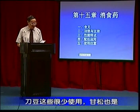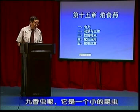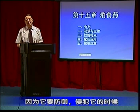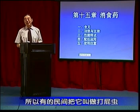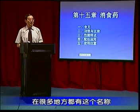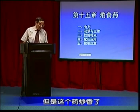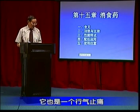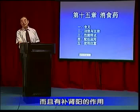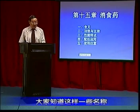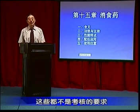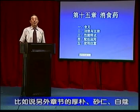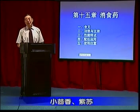刀豆这些很少用，甘松也是。九香虫是一个小昆虫，它要防御侵犯时会放出很臭的气，所以有的民间把它叫做打屁虫。但是这个药炒香了以后，有的把它作为做餐用的食品而很香可口，所以称为九香虫。它也是一个行气止痛，而且有补肾壮阳的作用，所以有的医生还是比较喜欢使用。这些都不是考核的要求。除了这一章的行气药以外，前面讲过后朴、砂仁、白豆蔻、小茴香、紫苏，这些都是比较常用且行气作用比较强的。